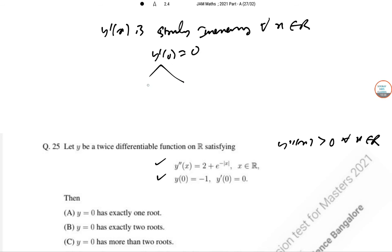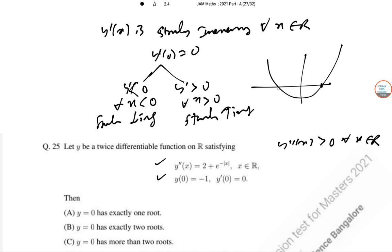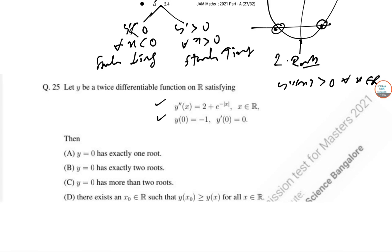So, these two subsections. One is Y dash is less than zero and Y dash is greater than zero for all X less than zero, for all X greater than zero. So, this is strictly decreasing and this is strictly increasing. So, you can draw this segment as well. So, exactly has two roots. Option B is the correct answer.